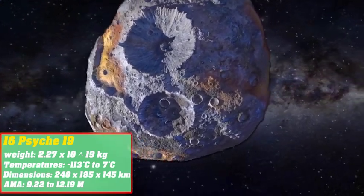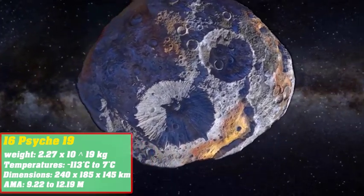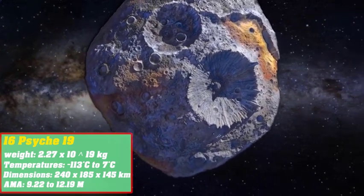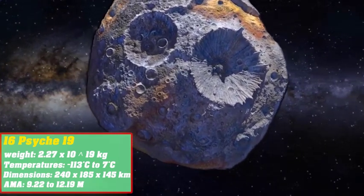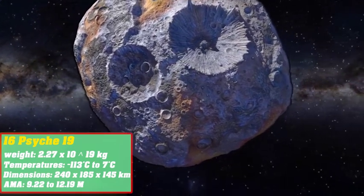Radar observations show that Psyche is composed entirely of nickel iron and other rare metals. Psyche does not show any indication of aqueous mineral presence on the surface. This is consistent with a statement that it is a metal body.